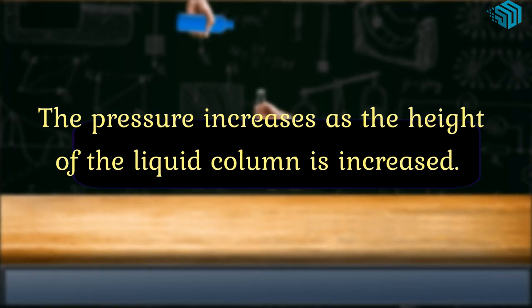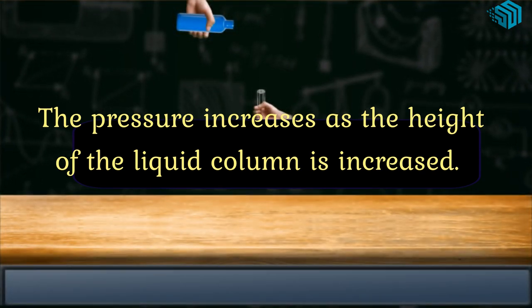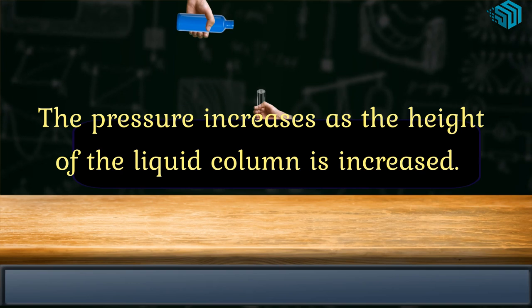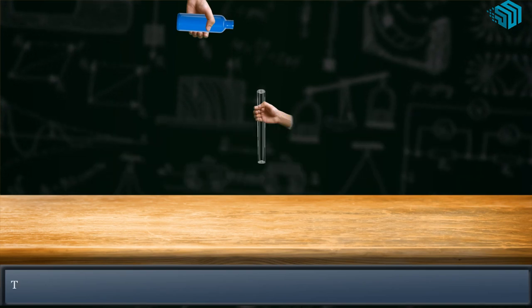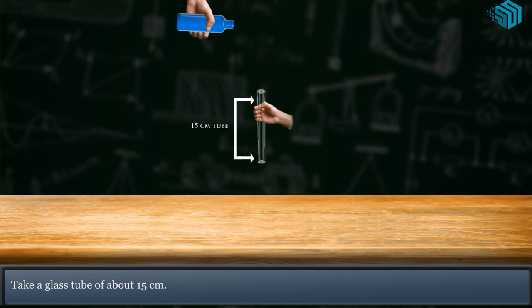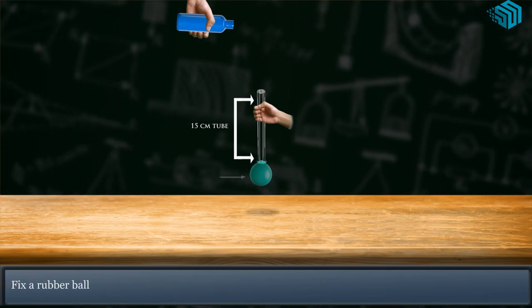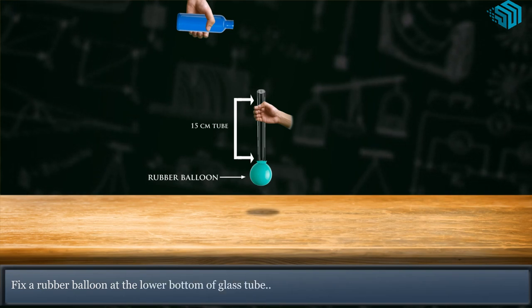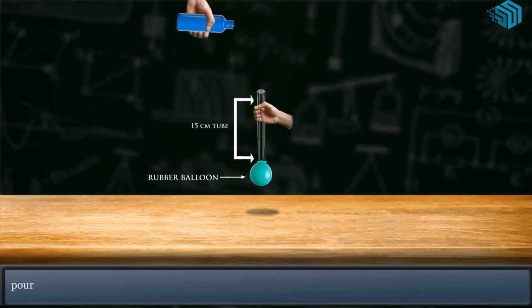Let us learn through an experiment: pressure increases as the height of the liquid column is increased. Take a glass tube of about 15 centimeters. Fix a rubber balloon at the lower bottom of the glass tube. Pour some water into the glass tube.